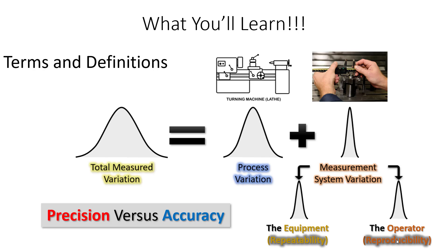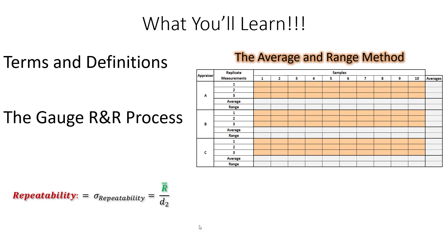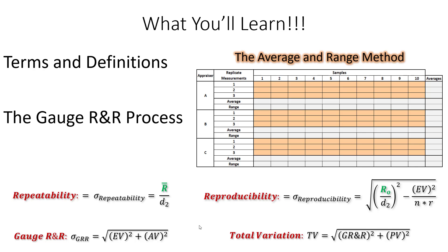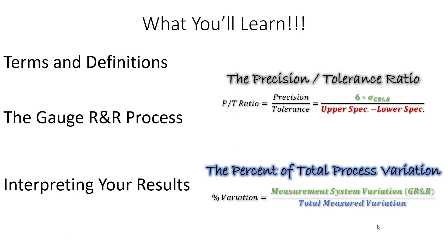Today's video is part of a three-part series. In the first part, we talked about all the key concepts and terms needed to perform a gauge R&R — like repeatability, reproducibility, measurement system variation, total variation, and the difference between precision and accuracy. In the second part, we walked through the average and range method, collected data, and calculated repeatability, reproducibility, gauge R&R, and total variation. That video includes an actual Excel spreadsheet you can use to perform a gauge R&R. Today's video is all about interpreting your results — is your gauge good or bad? Are you using the right gauge?